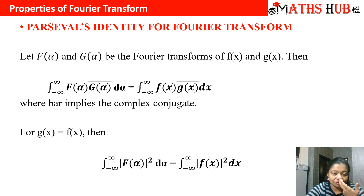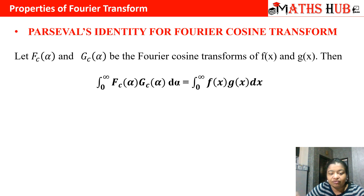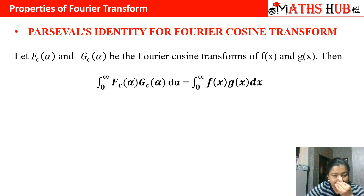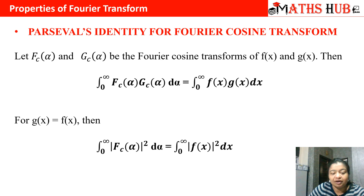For the Parseval's identity for Fourier cosine transform, the first change is that in Fourier cosine transform we assume the function to be even, so the domain changes from 0 to infinity. With two functions f(x) and g(x) and their Fourier cosine transforms f_c(α) and g_c(α), we have the result: the integral from 0 to infinity of f_c(α) times g_c(α) dα equals the integral from 0 to infinity of f(x) g(x) dx. When f(x) equals g(x), the formula reduces to |f_c(α)|² and |f(x)|² respectively.